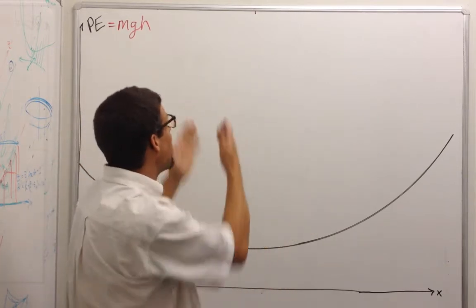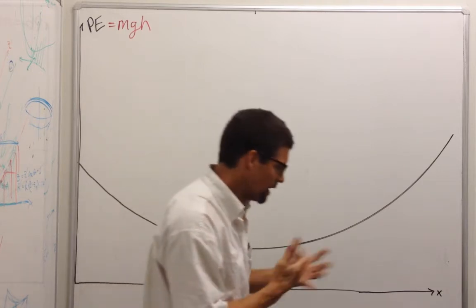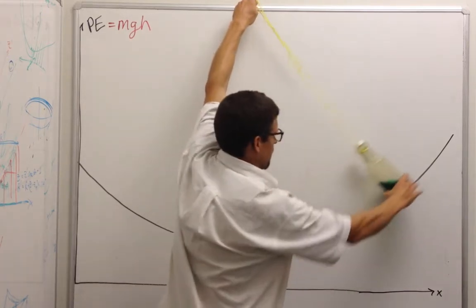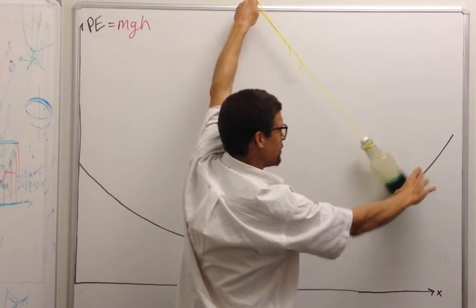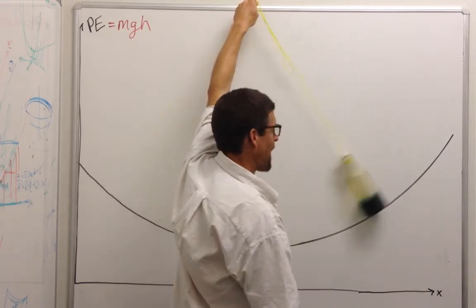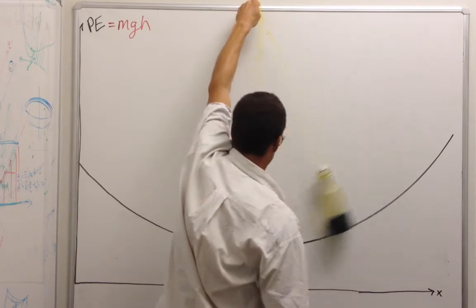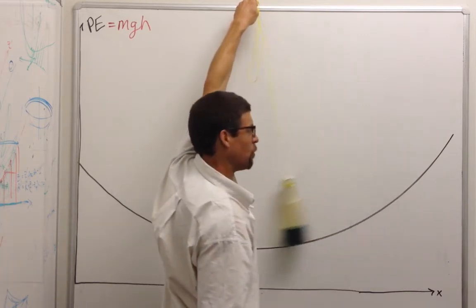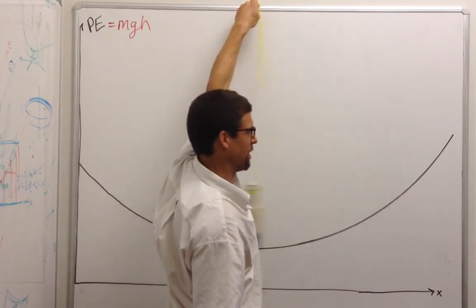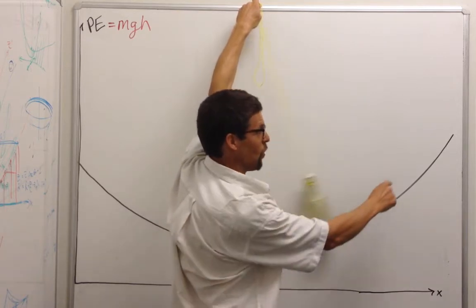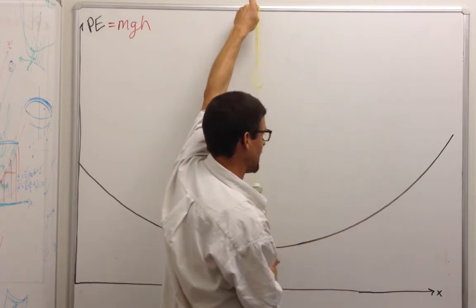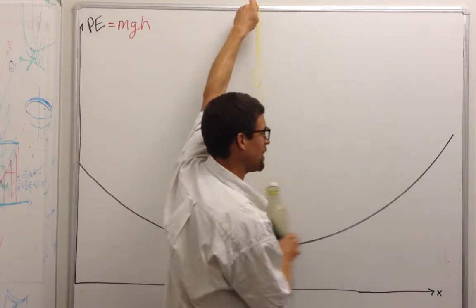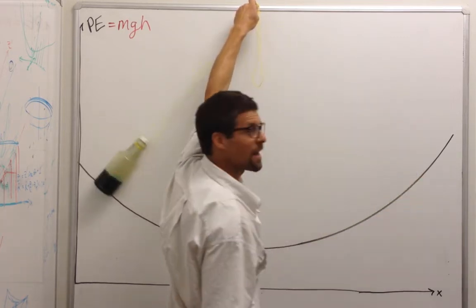So how would an object behave in that potential? We see that an object with this much energy will go back and forth between this point and this point, which we call the classical turning points. Because that's where it turns around. We also notice that as it comes down here, it loses potential energy, and that changed to kinetic energy.